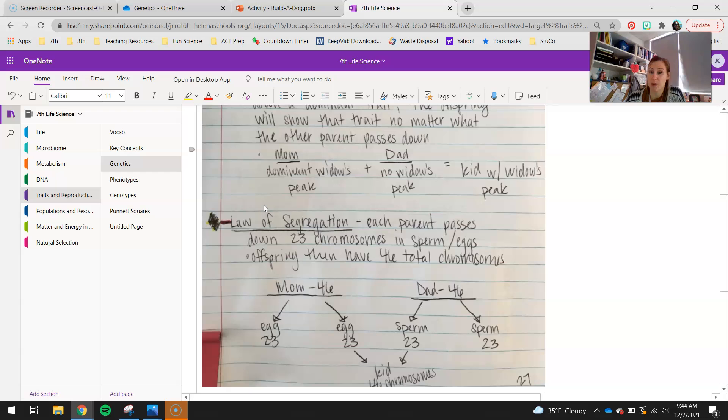Each parent passes down 23 chromosomes. So, we know by now that in our cells, each of our little cells in our body, like if we were to take a skin cell or a muscle cell and look at the nucleus and count how many chromosomes we have, we have 46. We have two sets of 23, which all equal 46.